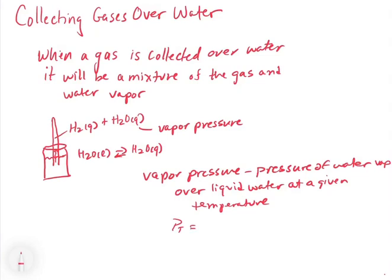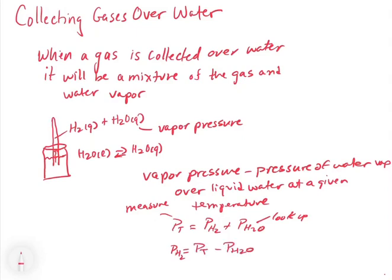Because this is a mixture, we can say the total pressure equals the pressure of the hydrogen gas plus the pressure of H₂O, since it's a mixture of two gases. What we do is look up the vapor pressure and measure the total pressure. If we want just the pressure of H₂, that would be the total pressure minus the pressure of H₂O — we subtract away the gas we're not interested in to get the pressure of just the H₂.